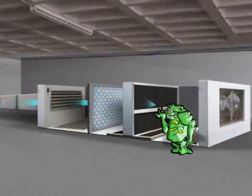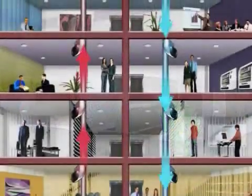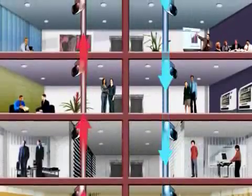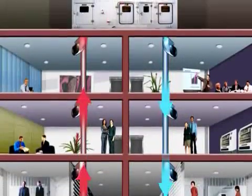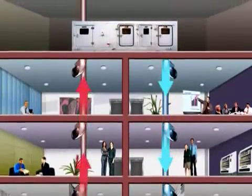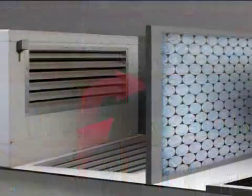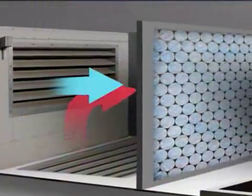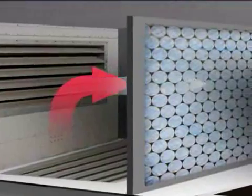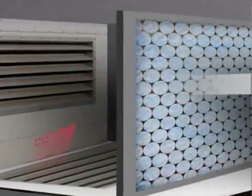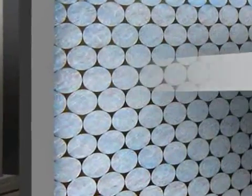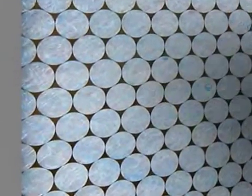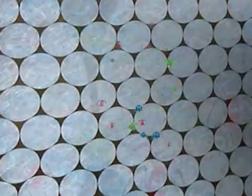The used air, full of coughs, sneezes and odours, is recycled back and pulled through the filters. The filters trap the big dust, but the smaller items, such as mould, viruses and bacteria, pass straight through the filters into the cooling coils.